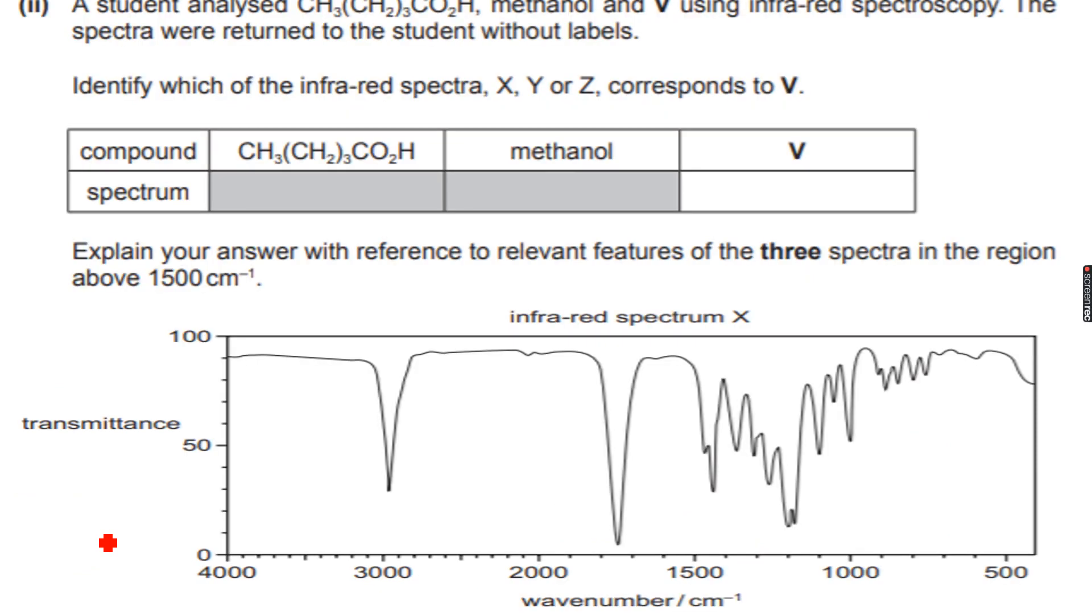A student analyzed CH3(CH2)3CO2H. So CH3(CH2)3CO2H. This was one of the compounds he analyzed. Then methanol and V. So we do not know what compound V is, but we know methanol. Methanol is CH3OH. This is methanol and some random compound V. We do not know what compound V is. Using infrared spectroscopy, the spectra were returned to the student without labels.